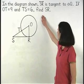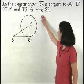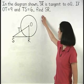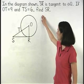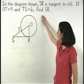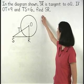In the diagram shown, line SR is tangent to circle O. If OT equals 9 and TS equals 6, find SR.